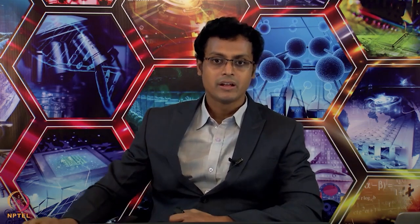All these effects put together give a very functional and effective catalytic cycle. The nucleophilic attack on the electrophilic center and subsequent rearrangement gives rise to L-ornithine and urea production. Urea is coordinated between the two manganese centers, supported by glutamate 277; subsequently a water molecule comes and produces urea. The water molecule bridged between the two manganese centers can then be deprotonated due to the dimanganese center.